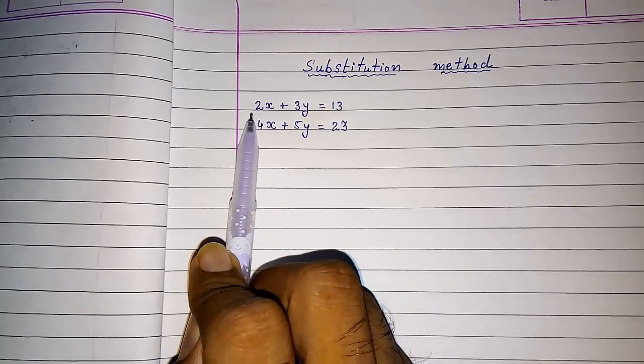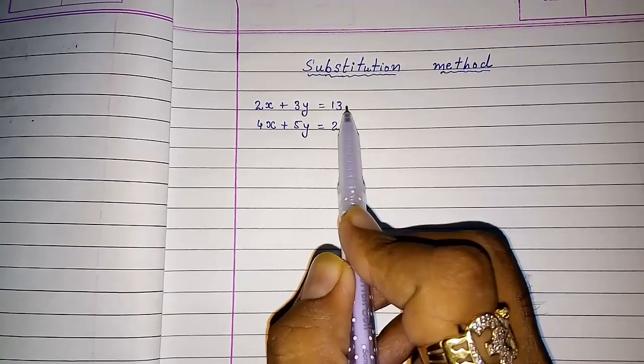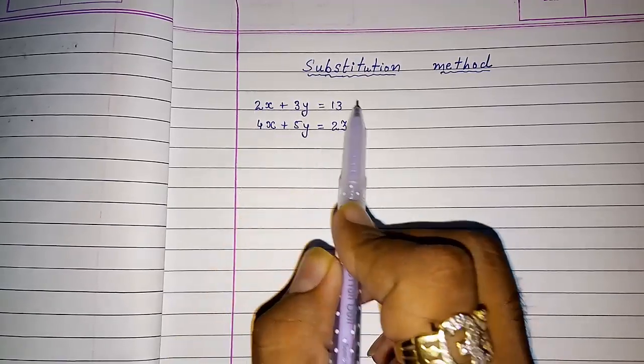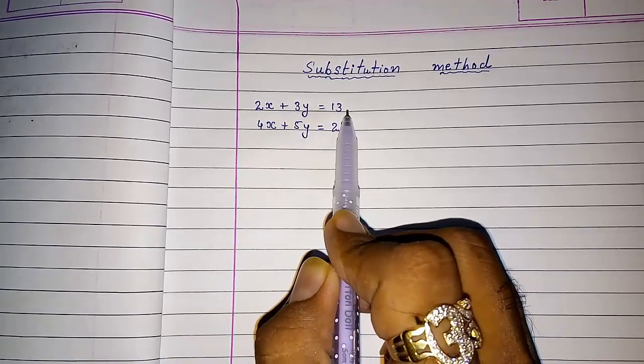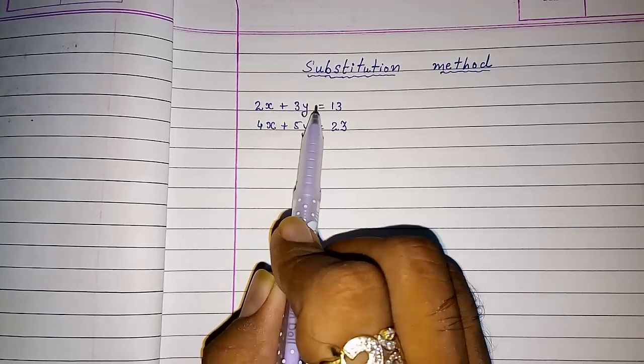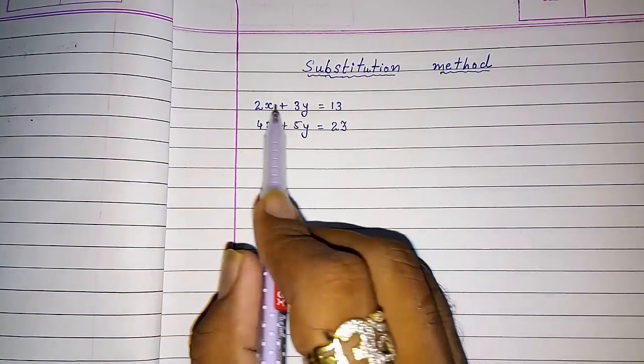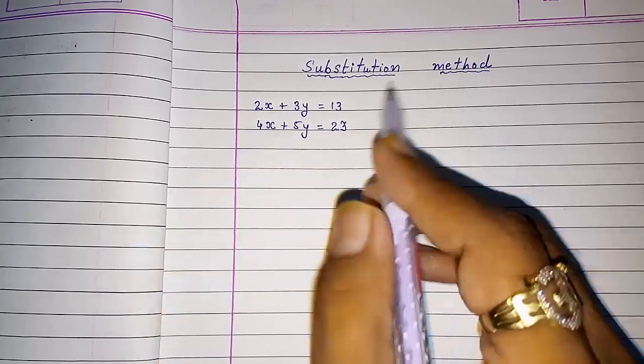First, we have to select any of the two equations. From this, we have to select any one equation. If I am selecting the first one, then I have to find x in terms of y or y in terms of x. Here we are going to find x in terms of y.